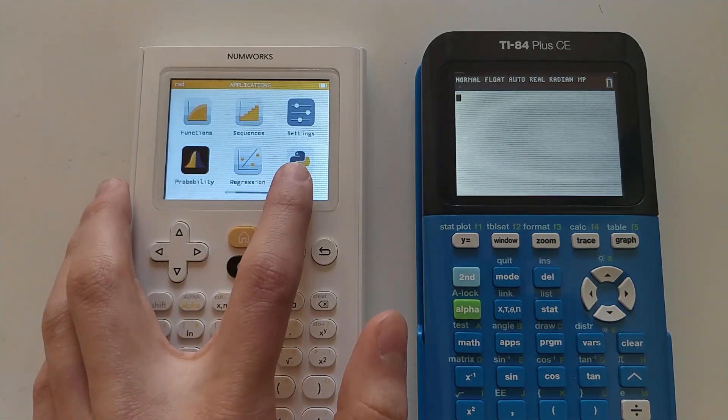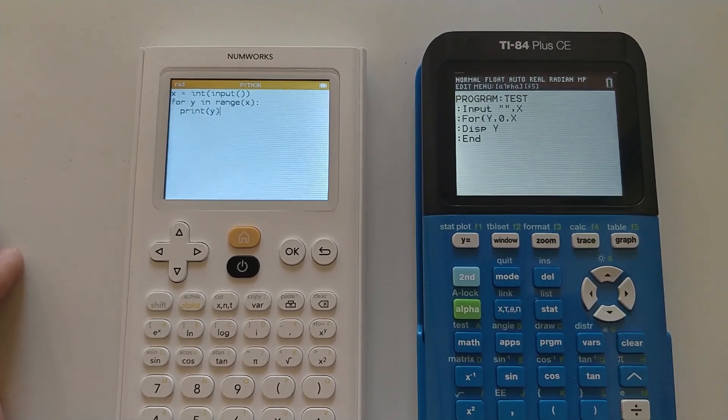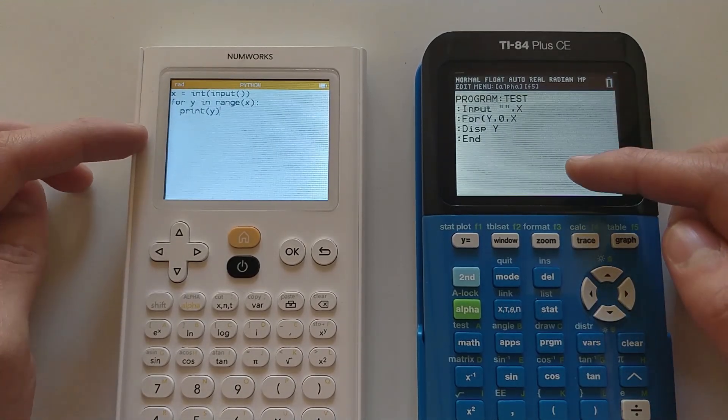If you are interested in programming, the Numworks calculator is by far the better option in my opinion. Whereas the CE uses TI-Basic, which as the name would suggest is incredibly basic and limiting, the Numworks uses Python, one of the most popular programming languages in the world.